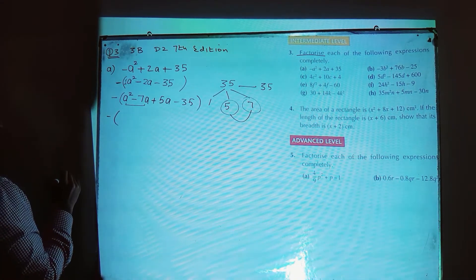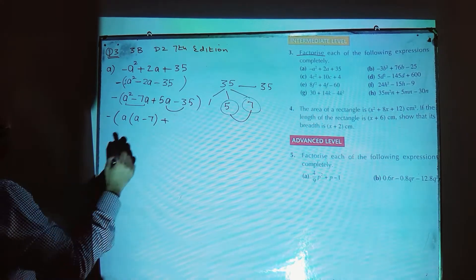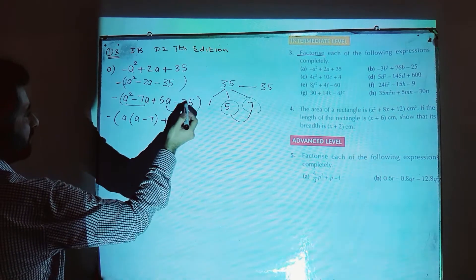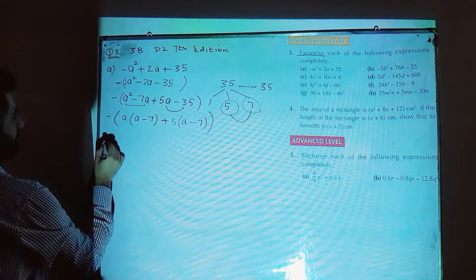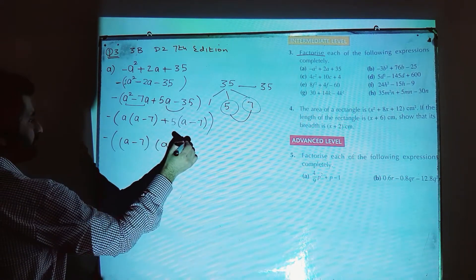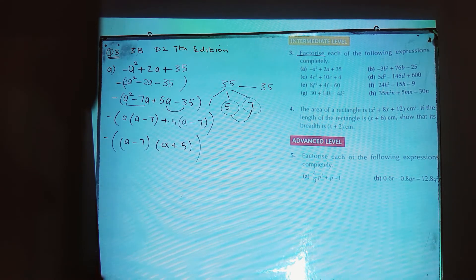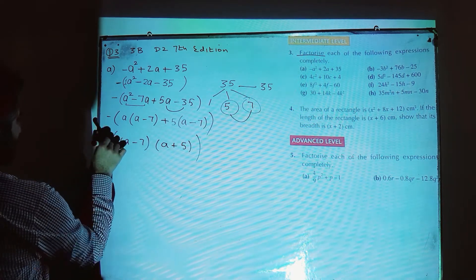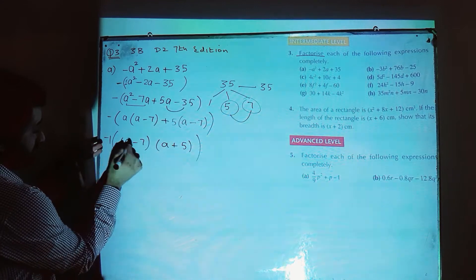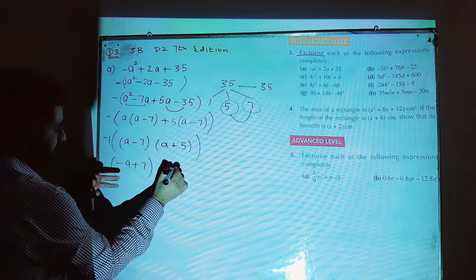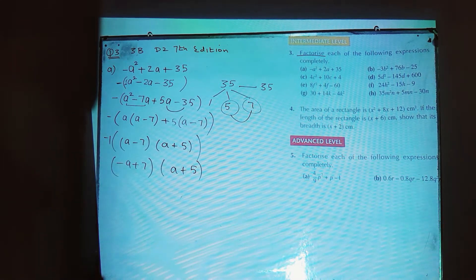Now the factorization process: from the first two terms, a is common, giving a(a minus 7). From the last two terms, 5 is common, giving 5(a minus 7). So the factors are (a minus 7)(a plus 5). But we still have the negative sign outside, so multiply it through: minus 1 into (a minus 7) gives (minus a plus 7). The final answer for part a is (minus a plus 7)(a plus 5).